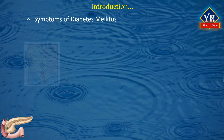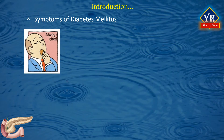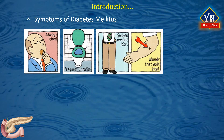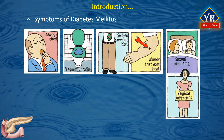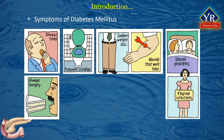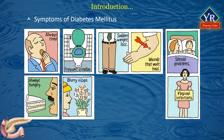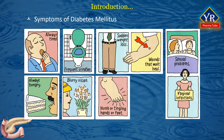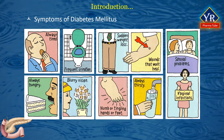Diabetic patients always look tired and experience frequent urination, sudden weight loss, wounds that won't heal, sexual problems, and some vaginal infections in females. They always feel hungry, have blurry vision, numbness and tingling in the hands or feet, and always feel thirsty.